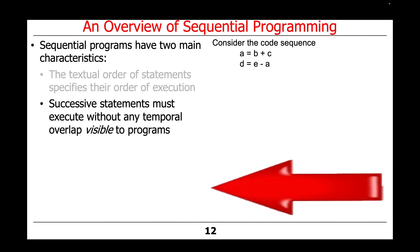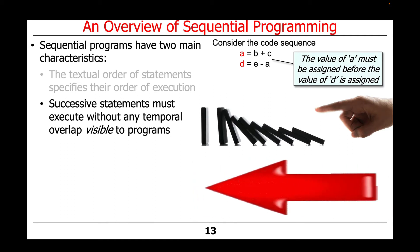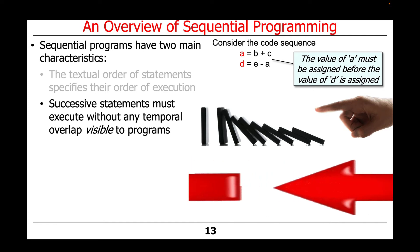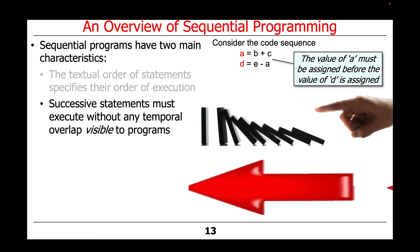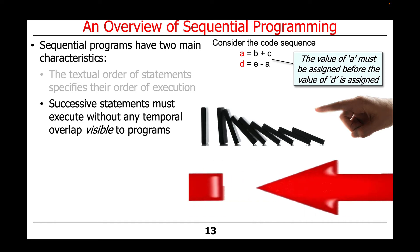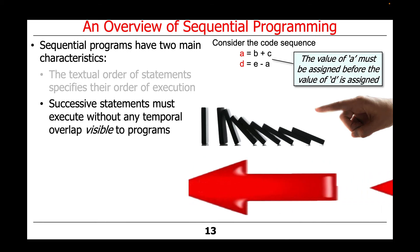Let's take a look at an example. Here we have an example where we say a equals b plus c and d equals e minus a. Implicit in the semantics of this, say in Java, is the value of a must be assigned before the value of d is assigned. That seems obvious, but there's more to the story than meets the eye at first glance.